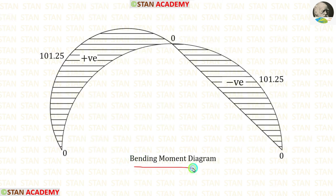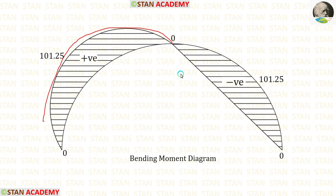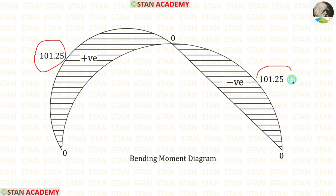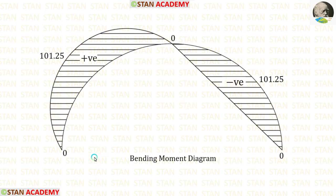Now let us draw the bending moment diagram. At the crown, the bending moment is 0. On the left side, the bending moment is positive, so it comes above the arch. On the right side, the bending moment is negative, so it comes below the arch. Applying the calculated maximum positive and negative values of ±101.25 kNm, and since there is a UDL on the left side, the bending moment diagram is parabolic in shape on that side. Thank you for watching this video.